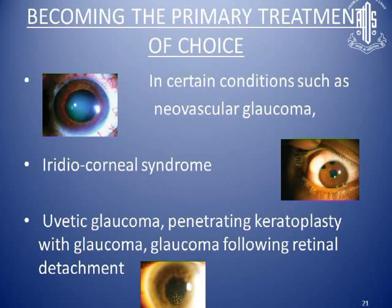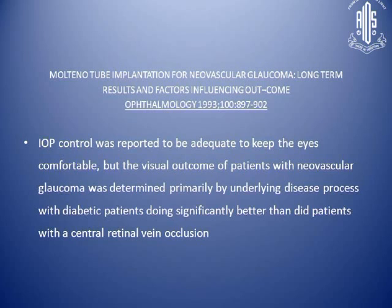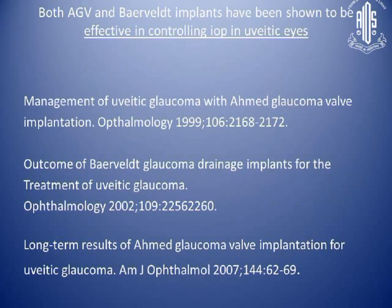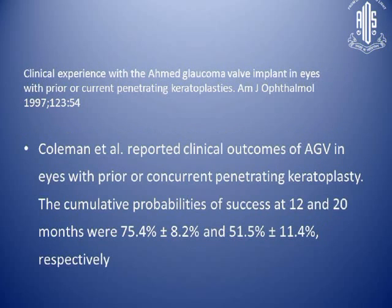Tubes and aqueous drainage devices are becoming the primary treatment of choice in many refractory glaucomas such as neovascular glaucoma, ICE syndrome, uveitic glaucoma, and glaucoma occurring after penetrating keratoplasty. After a literature review, I found that Baerveldt valves are effective in controlling neovascular glaucoma, and Molteno devices can also be used adequately. Both AGV and Baerveldt are effective in controlling uveitic glaucoma and glaucoma after vitrectomy or retinal detachment. AGV can also be effective in controlling pressure rise after PK.